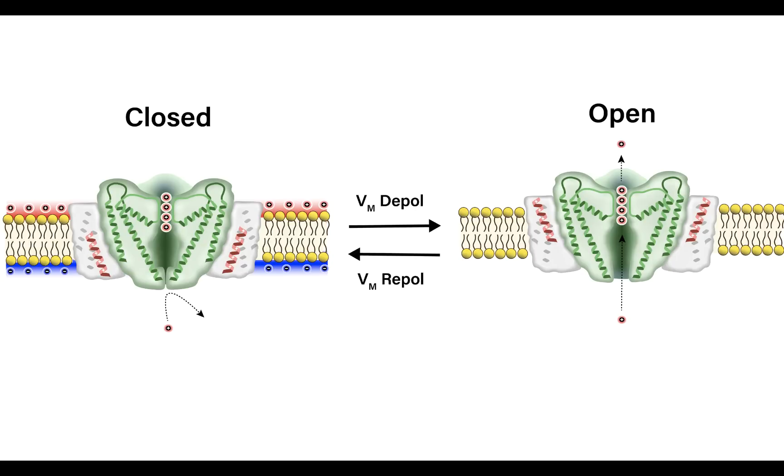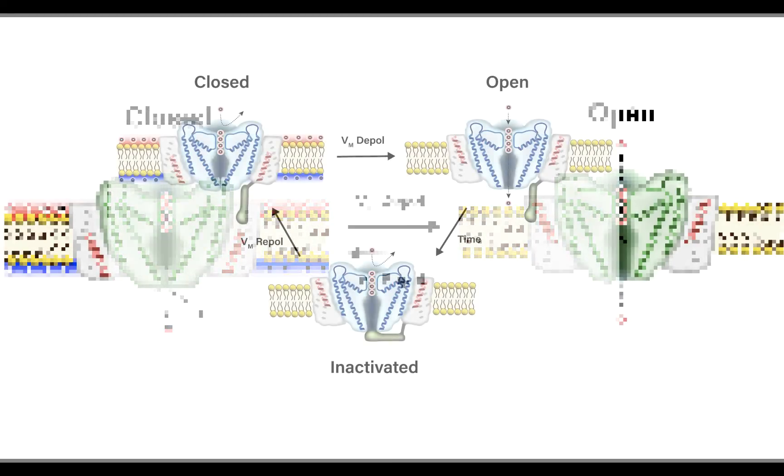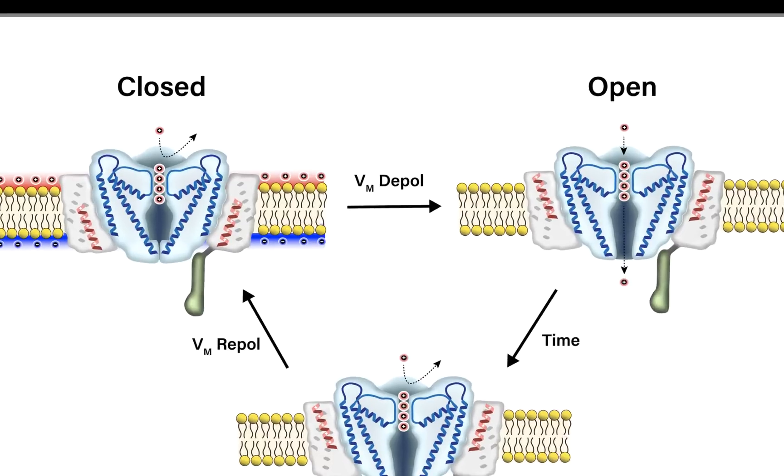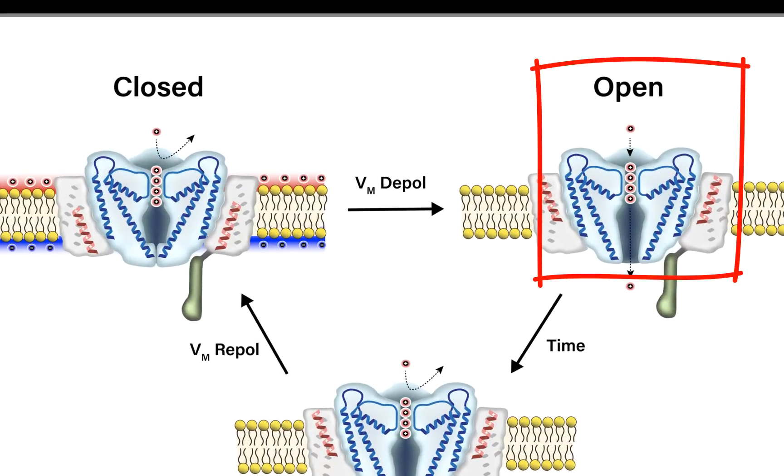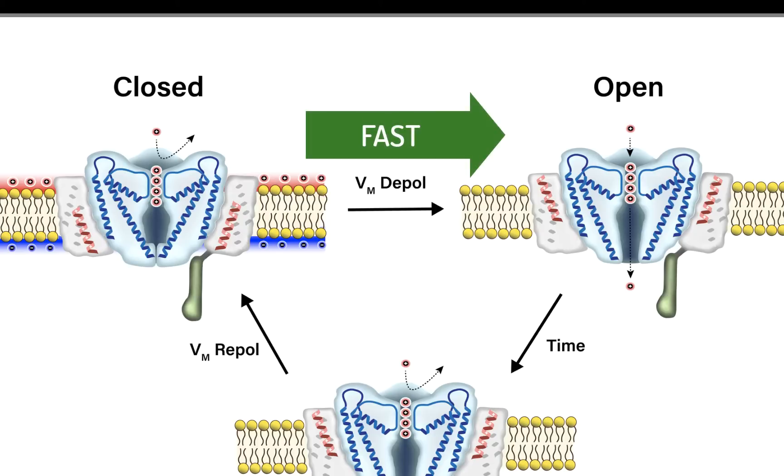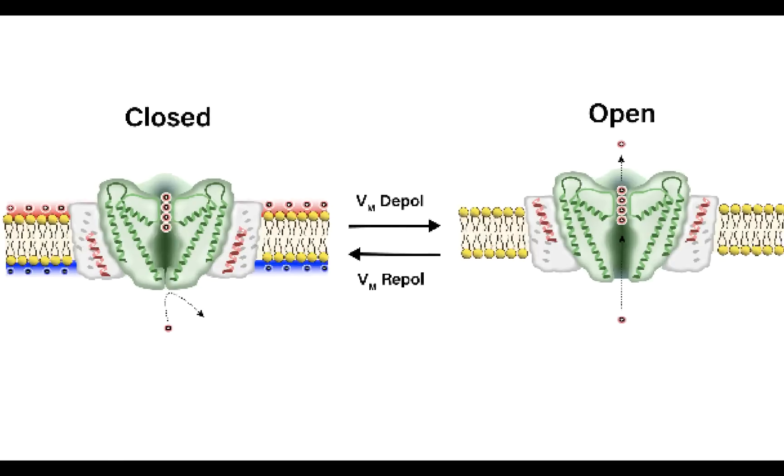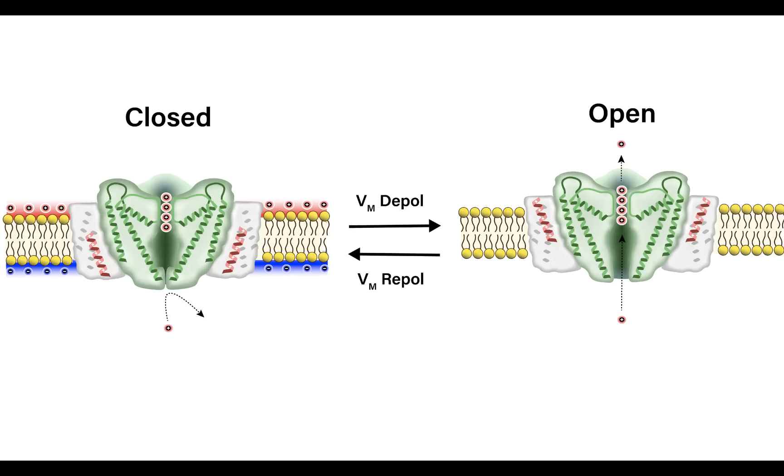This is in contrast to the voltage-gated sodium channels. When a membrane depolarization occurs that leads to channel opening of the voltage-gated sodium channels, the voltage sensor moves outwards and the voltage gate opens relatively quickly. In contrast for these voltage-gated potassium channels, when membrane depolarization occurs, it takes a few milliseconds or so for the potassium channels to ultimately respond and achieve their highest level of open probability given the magnitude of the membrane depolarization.